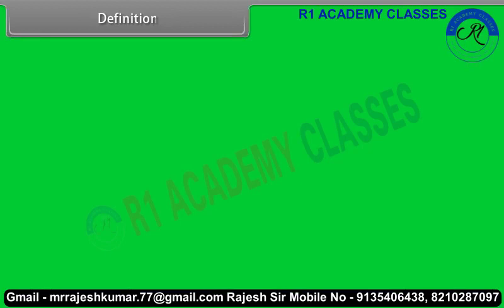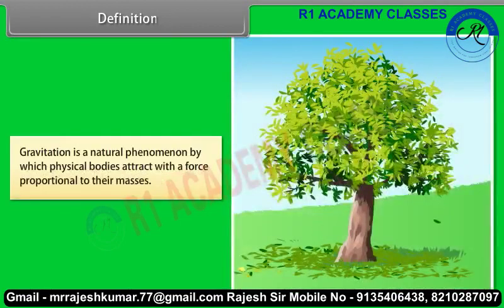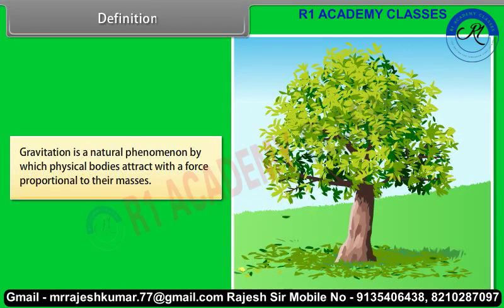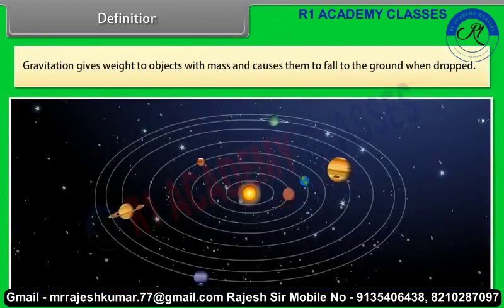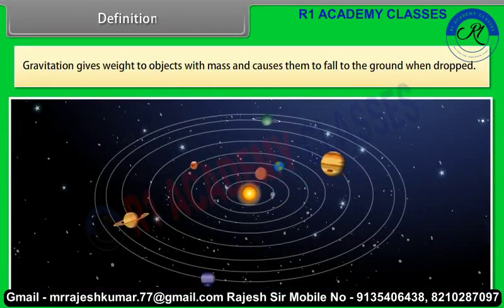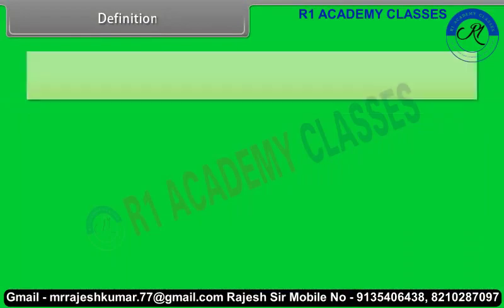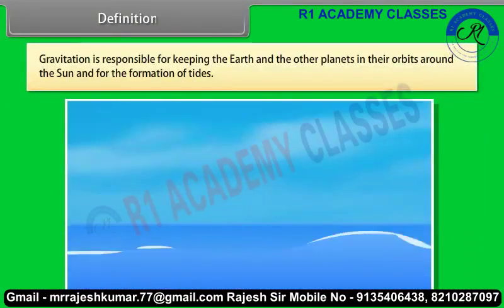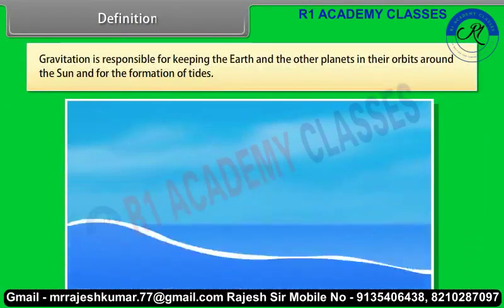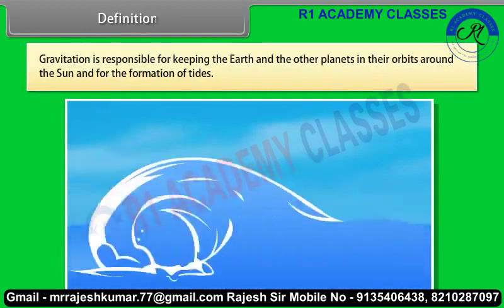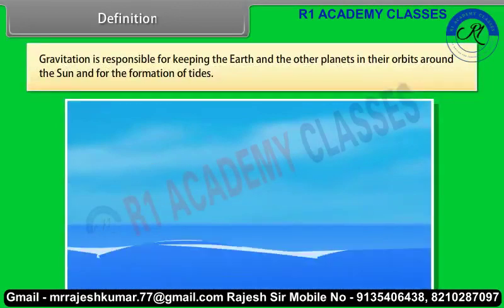Definition. Gravitation is a natural phenomenon by which physical bodies attract with a force proportional to their masses. Gravitation is most familiar as the agent that gives weight to objects with mass and causes them to fall to the ground when dropped. Gravitation is also responsible for keeping the earth and the other planets in their orbit around the sun and for the formation of tides.